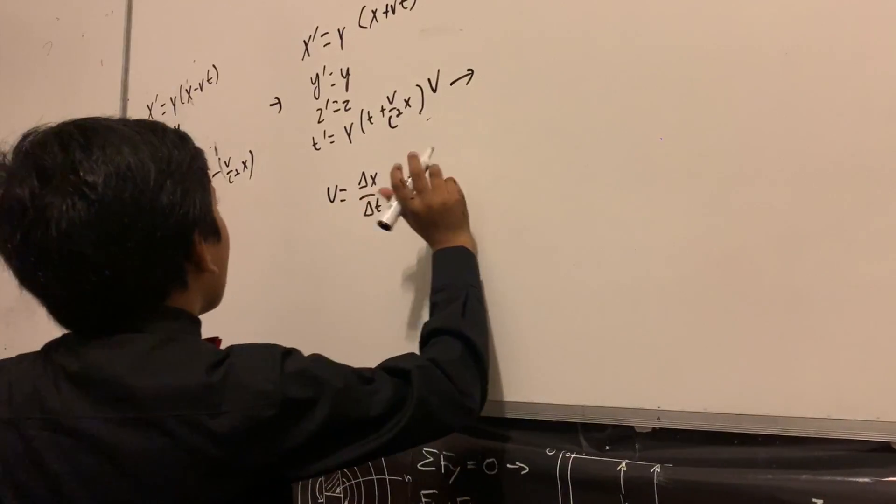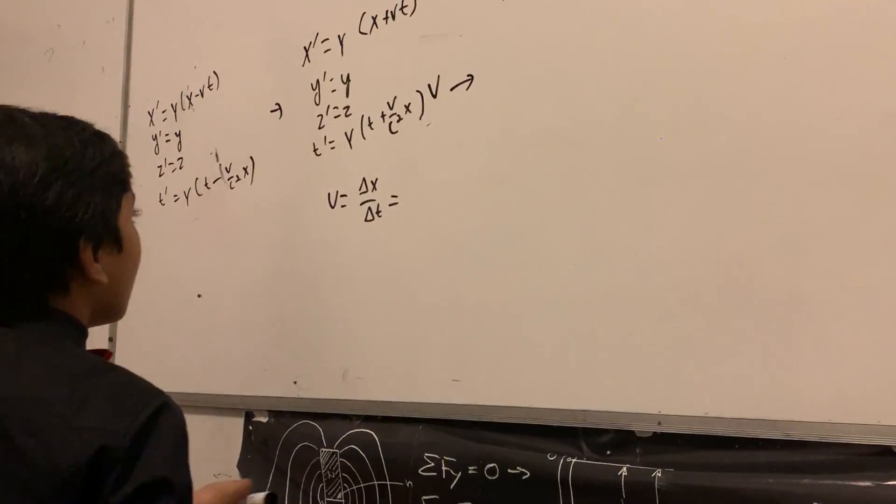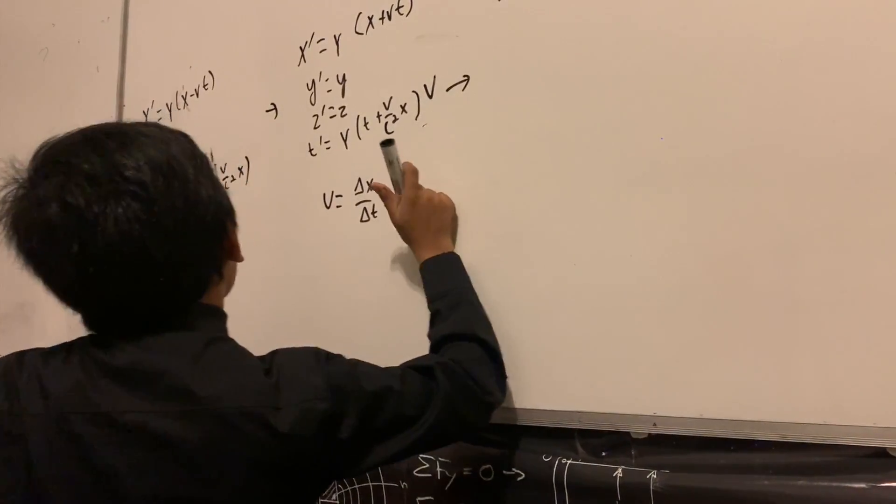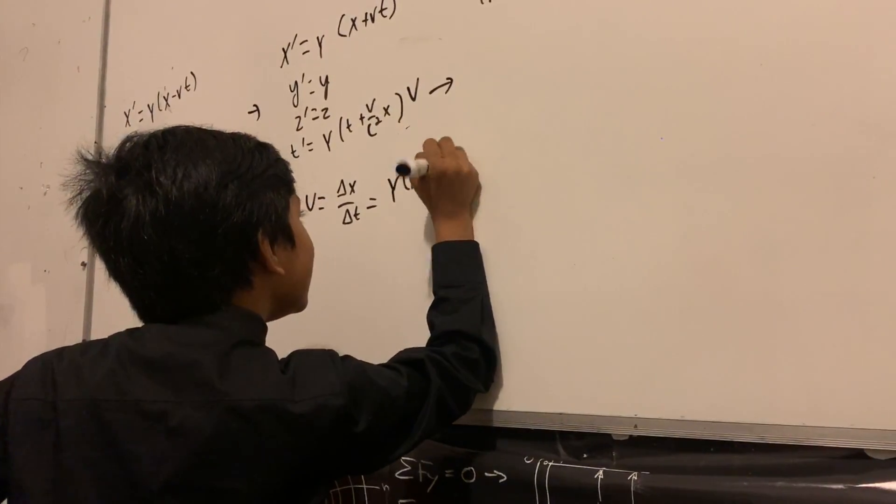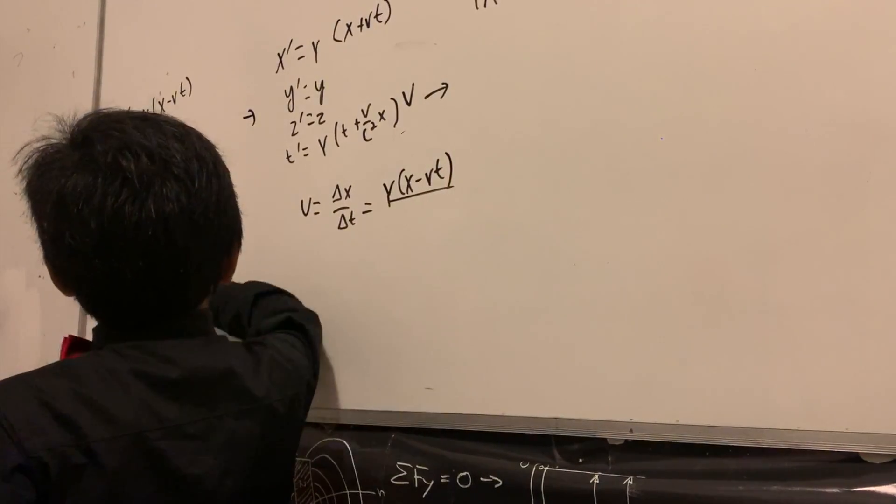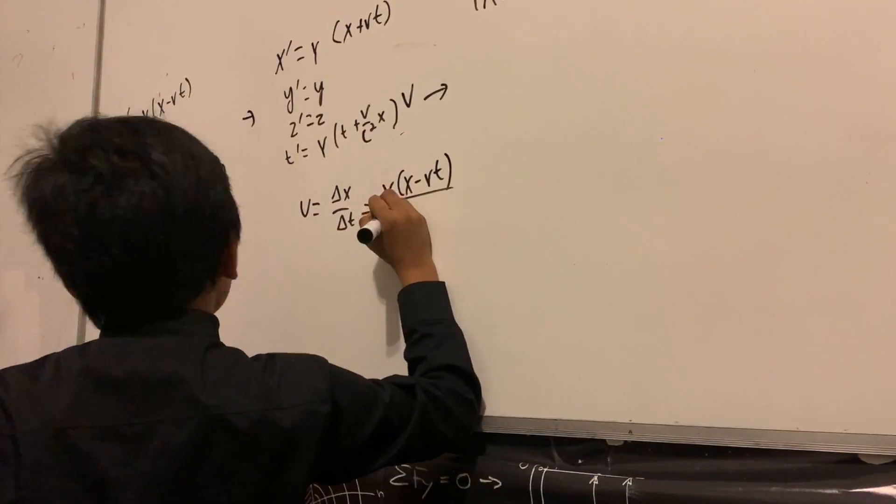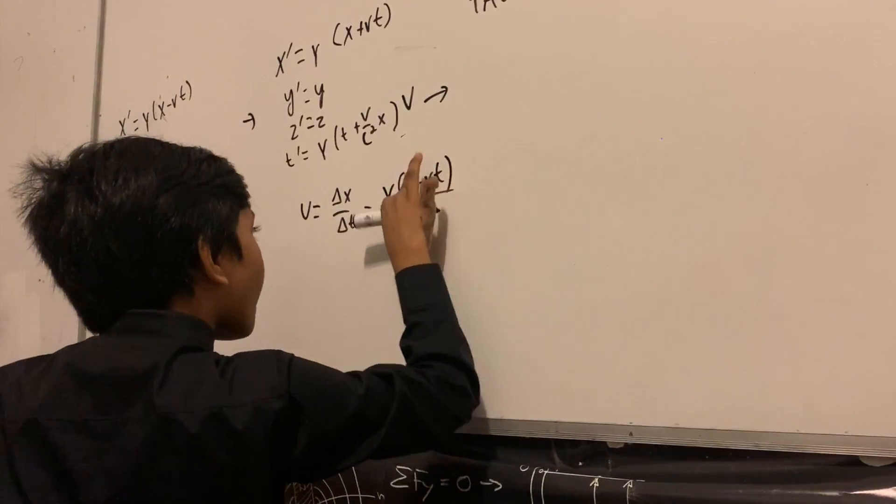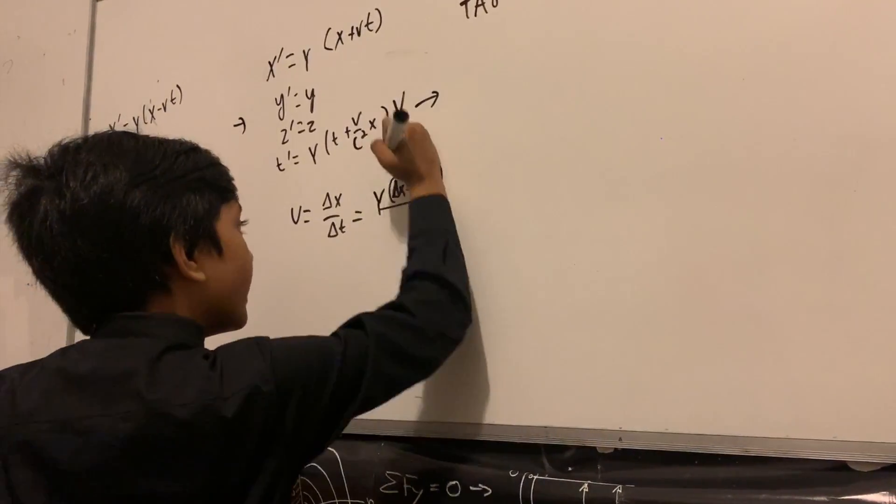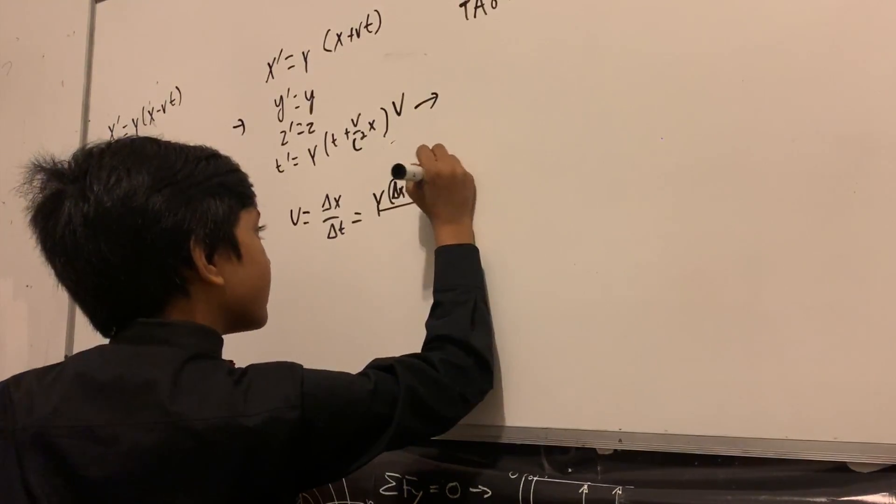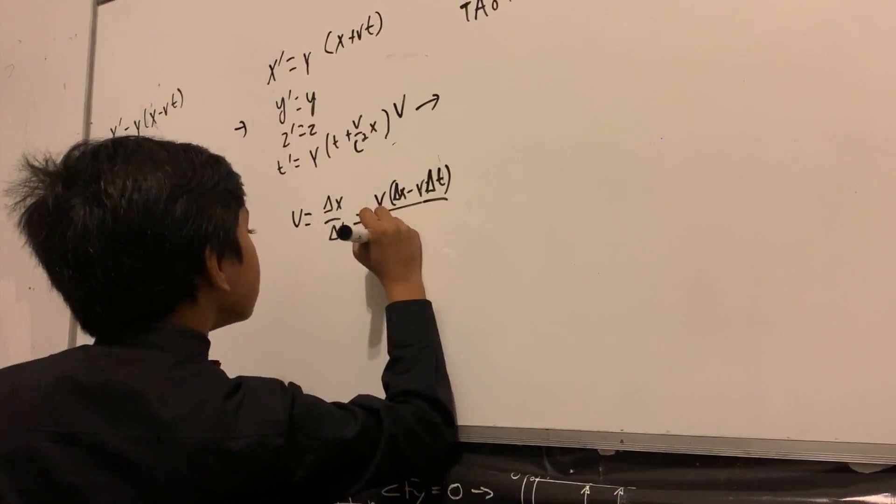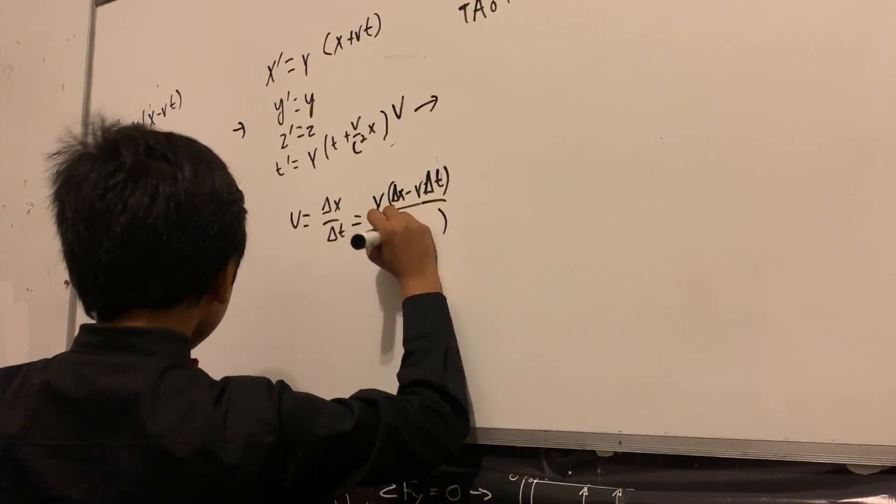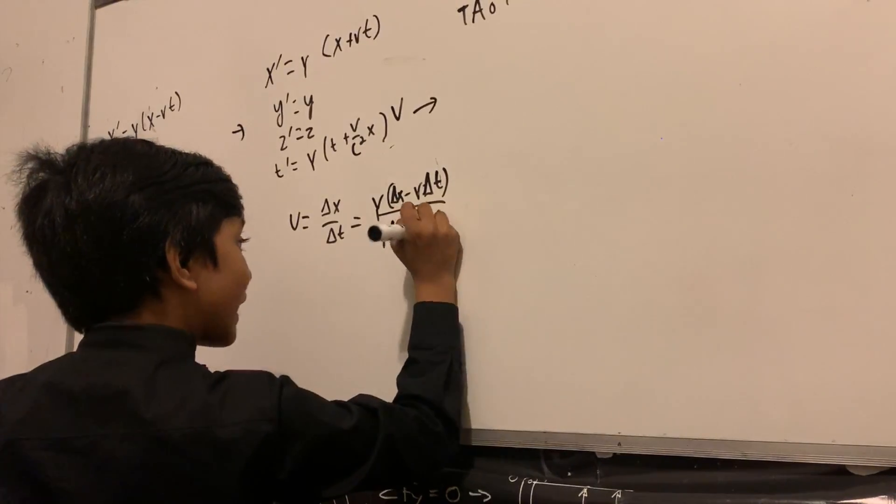So now when you're at... so now we can describe it like this: gamma times delta x minus v delta t, boom boom. Okay, now we have this, which is going to be... oh yeah I forgot, you have to put this. Gamma times delta t minus vx over c squared.